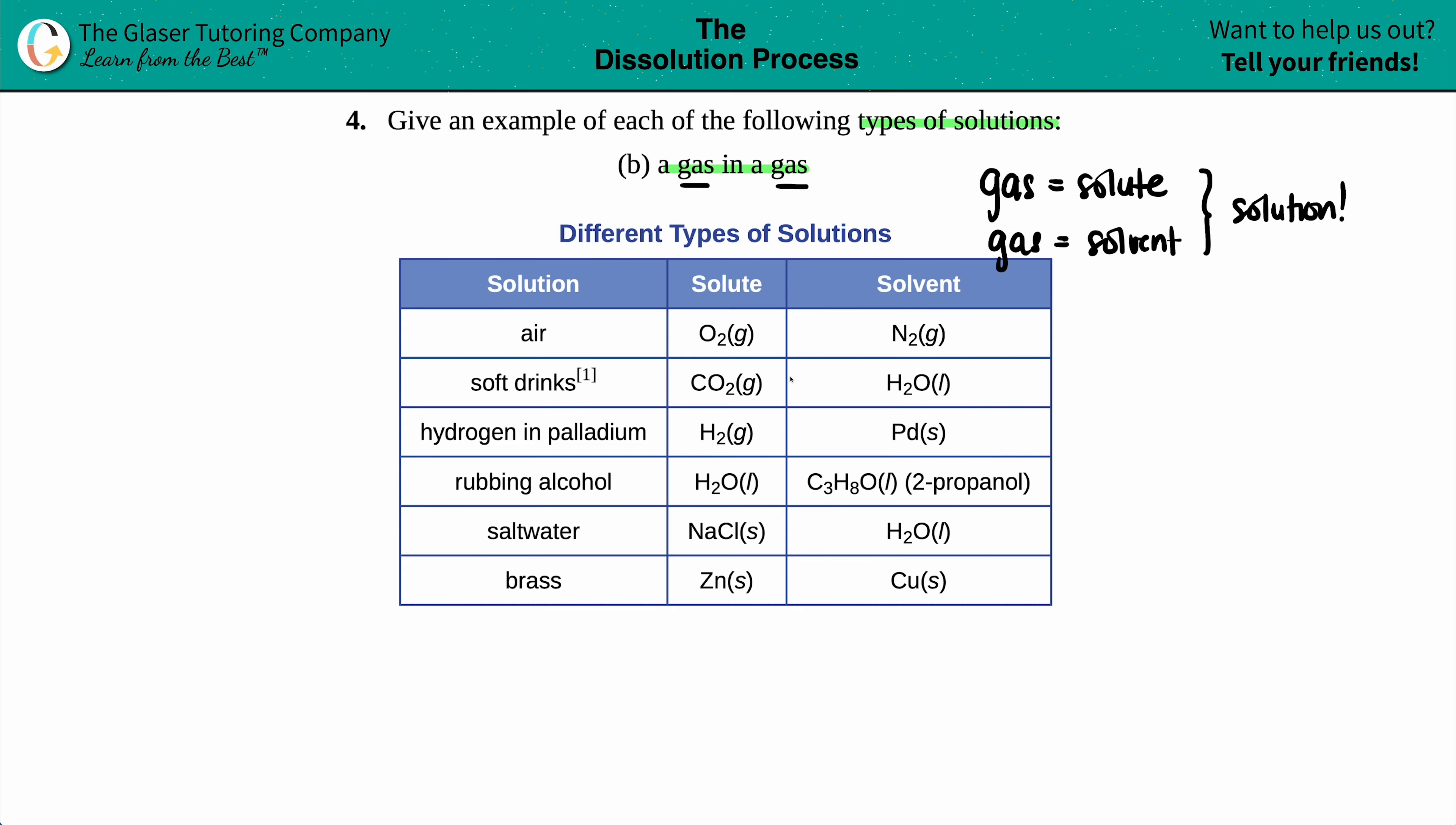If I look through it, it's the first one. The solute's always the smallest amount, so when O2 is in a lot of N2, that is the resulting air that we exist in.